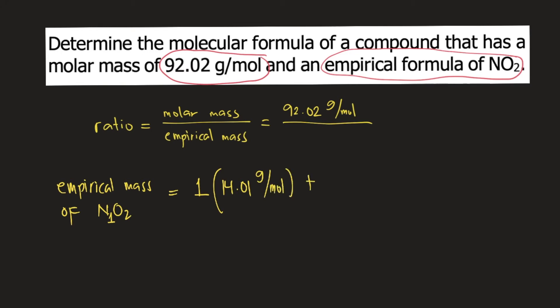plus 2 times the molar mass of oxygen, 16 grams per mole. So 1 and 2 are the subscripts of nitrogen and oxygen, respectively. This is the molar mass of nitrogen and this is the molar mass of oxygen.